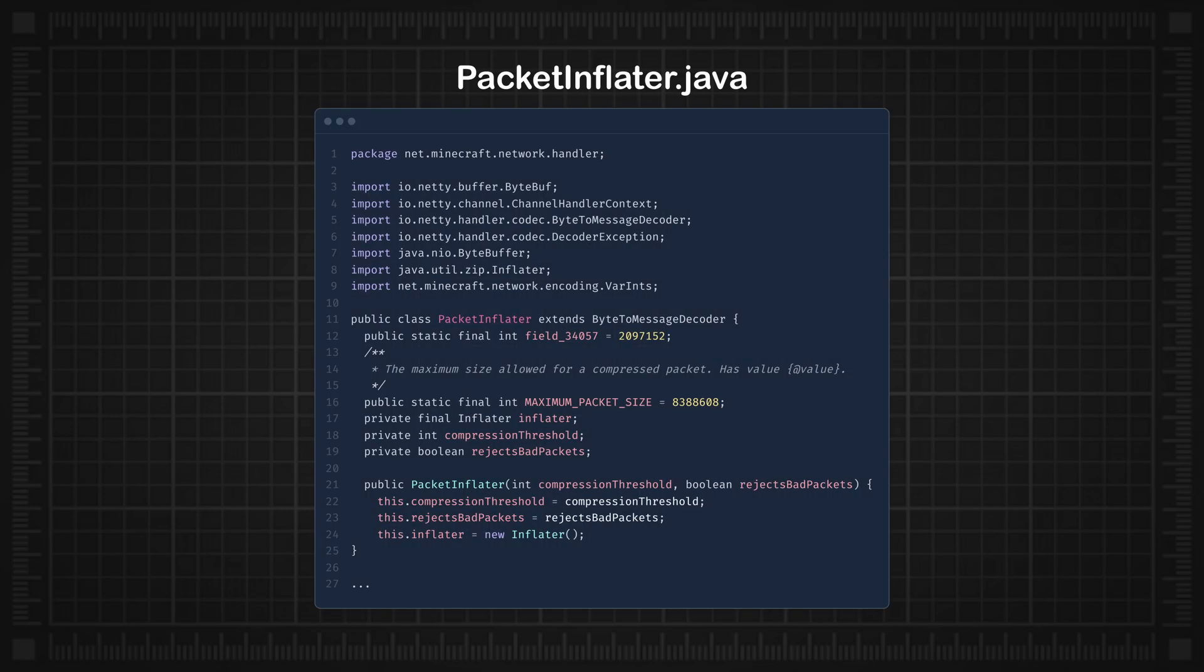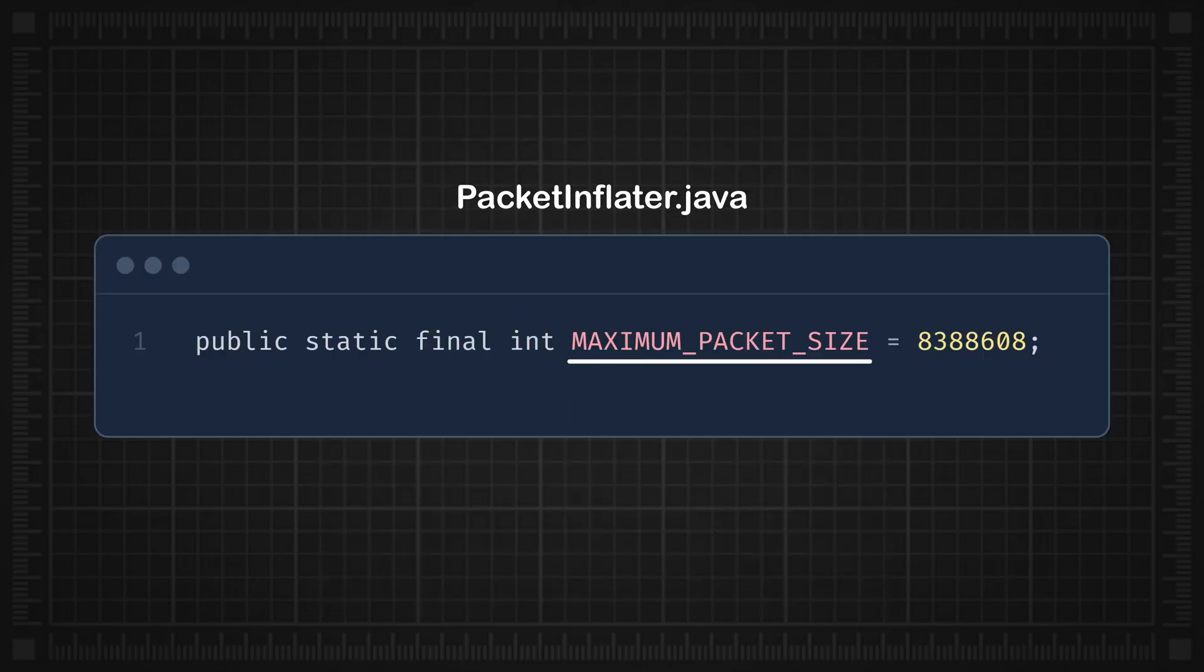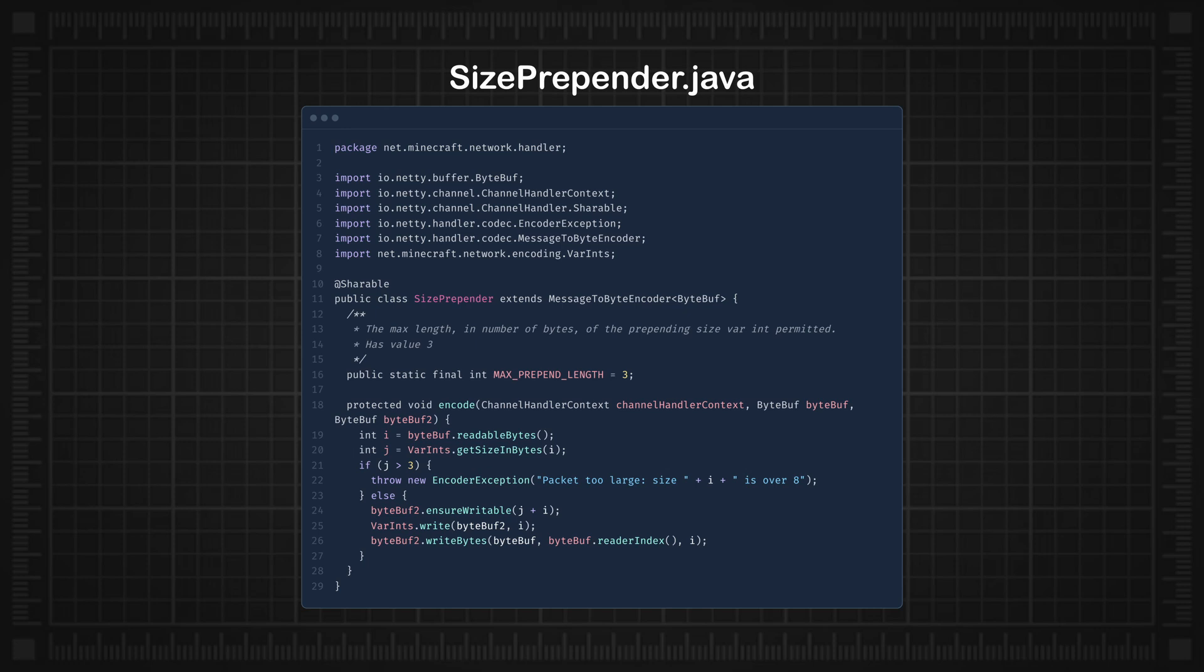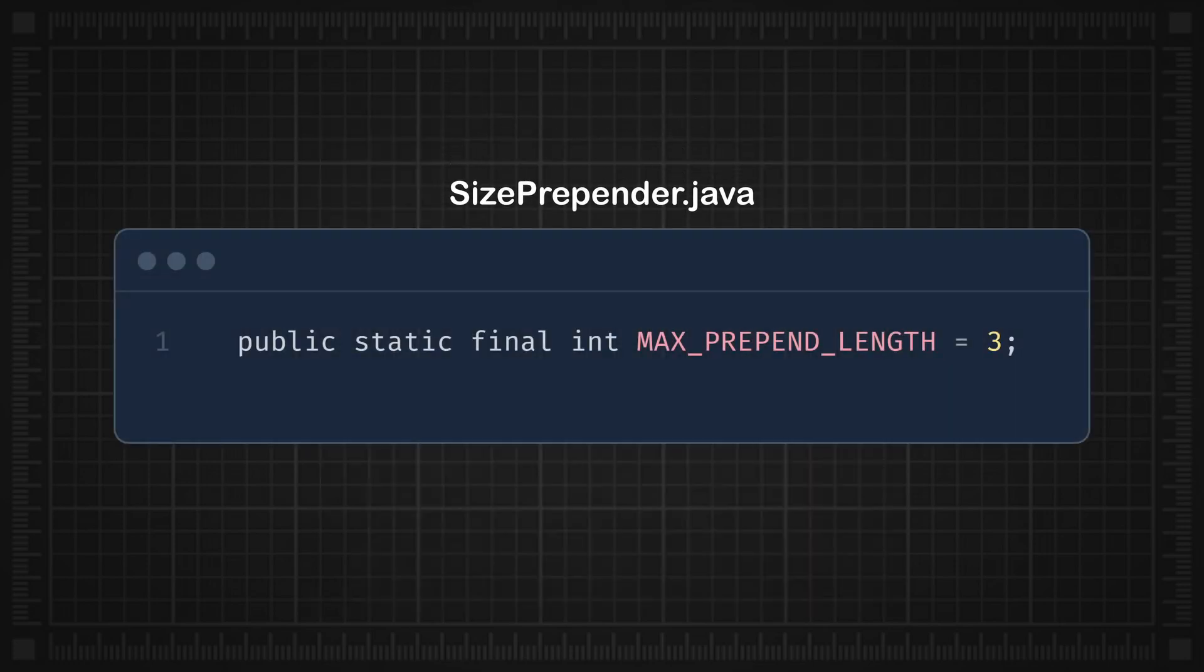Size limits in packet inflator: The server checks if the decompressed packet size exceeds the maximum allowed size. Size limits in size prepender: It checks if the size information itself can be represented within the allowed byte length.